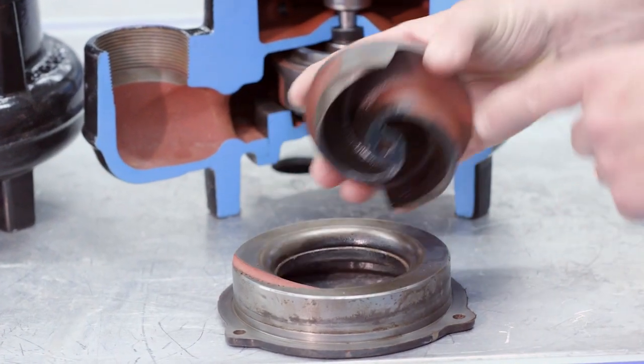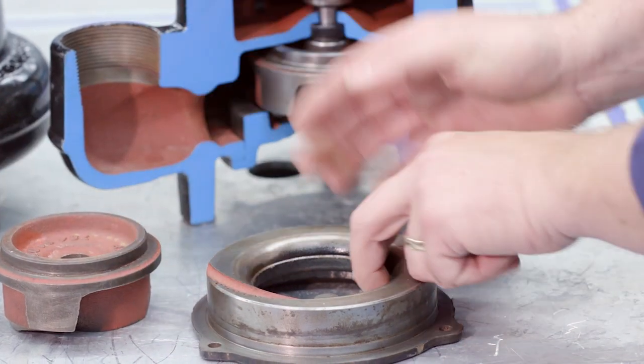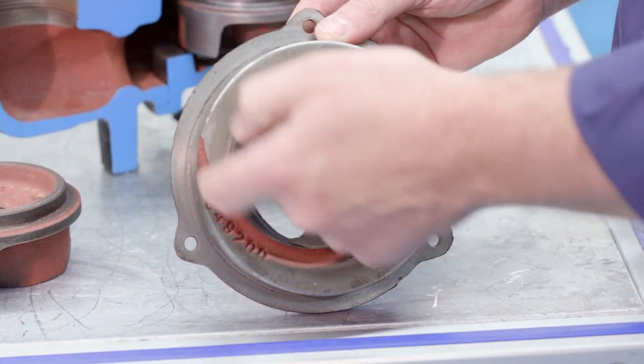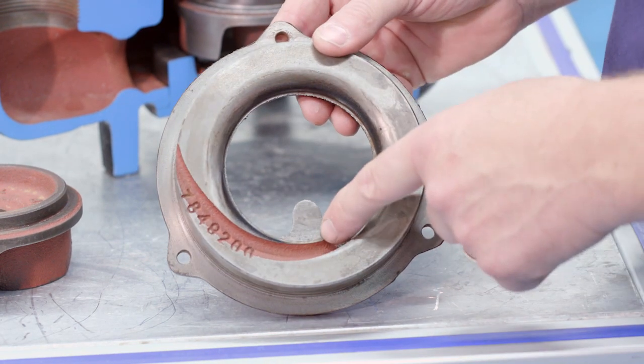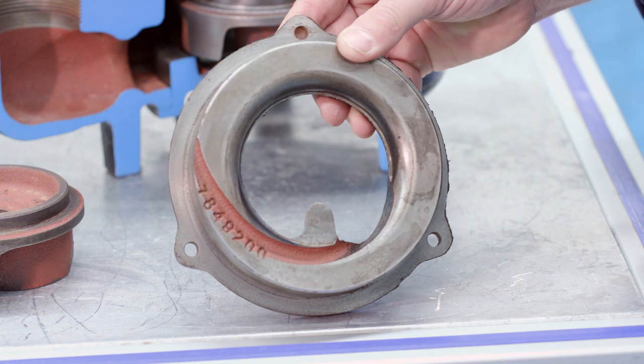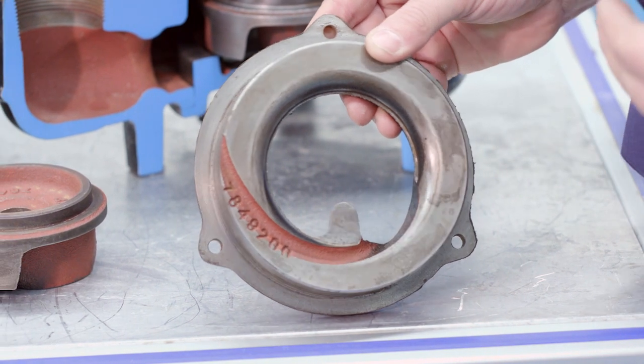Here is your K impeller, and here is your suction cover with your guide pin and the groove. What that does is it takes away your stringy material and eliminates that through the discharge as opposed to wrapping around the impeller.